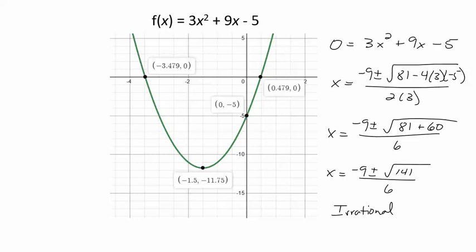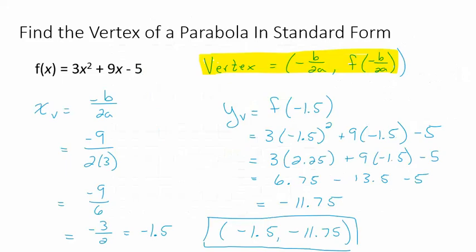So how do you avoid all that? This fancy, slick formula: negative b over 2a. Remember this one — write it on a note card, recite it during the day. Thank you.